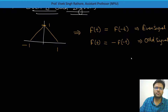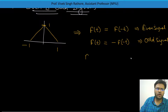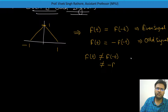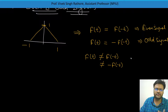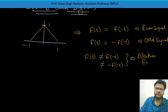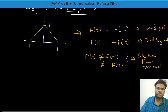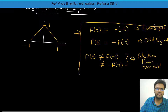If your signal F(t) is equal to minus of F of minus t — where F of minus t is time reversal and this is magnitude reversal — then this condition is satisfied for an odd signal. But if your signal is neither equal to F of minus t nor equal to minus F of minus t, then it is neither even nor odd. These three conditions you should remember.